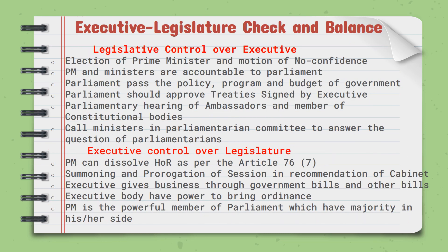Let's talk about the relation between the executive and legislature in terms of check and balance. How does the legislature control the executive? Through election of the Prime Minister and motion of no confidence, the legislature can elect and also dismiss the Prime Minister. The Prime Minister and ministers are accountable to parliament. Parliament passes the policy, program, and budget of the government. Parliament must approve treaties signed by the executive. Parliamentary hearing is required for ambassadors and members of constitutional bodies appointed by the executive. Ministers can be called before parliamentary committees to answer questions.